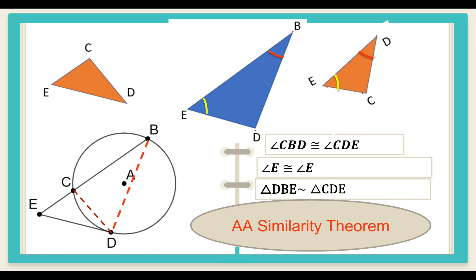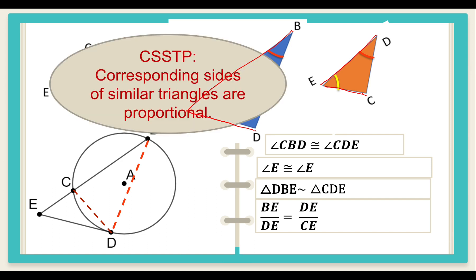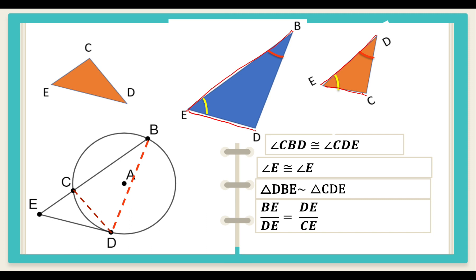Since we have established that these two triangles are similar, let us look at the sides relationship. We can say that DE over BE is equal to CE over DE, because corresponding sides of similar triangles are proportional. There is one more ratio we could include — BD over DC — but we are not including that because we don't need it in the proof. Whatever we are proving is what we need.